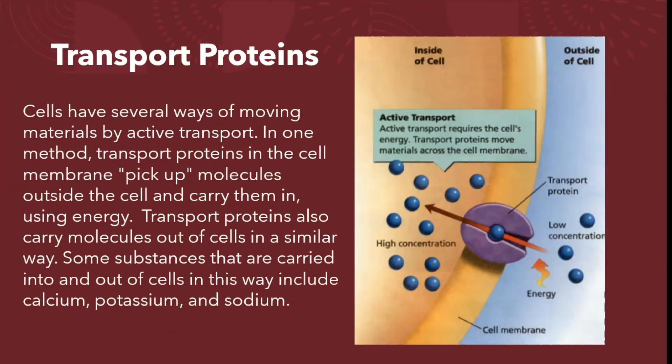Cells have several ways of moving materials by active transport. In one method, transport proteins in the cell membrane pick up molecules outside the cell and carry them in using energy. Transport proteins also carry molecules out of cells in a similar way. Some substances carried into and out of cells in this way include calcium, potassium, and sodium.